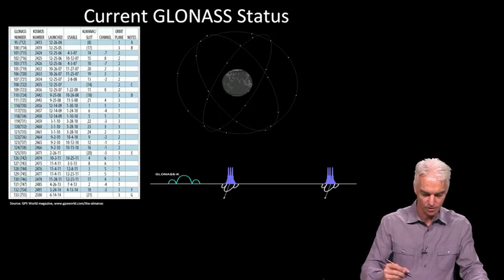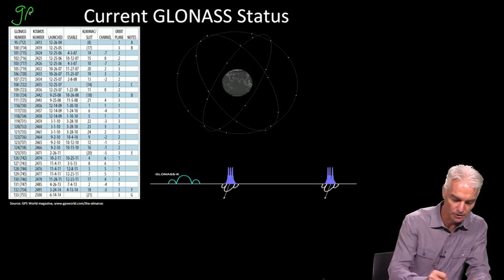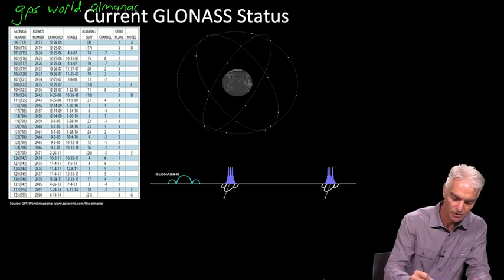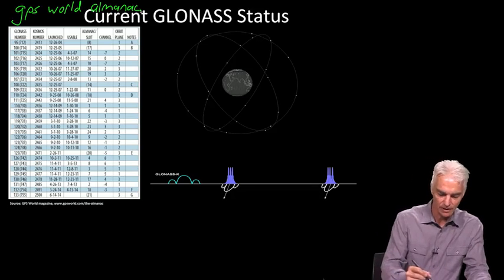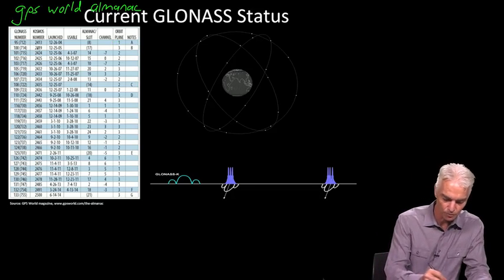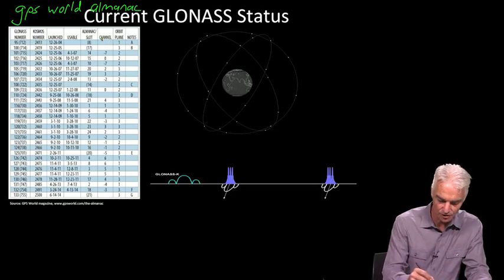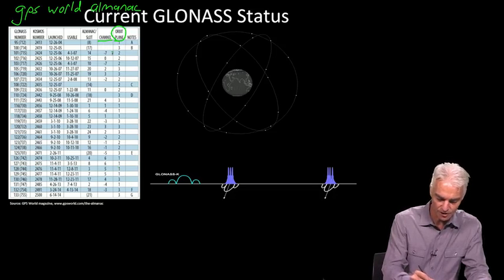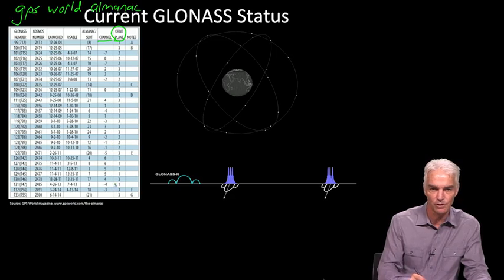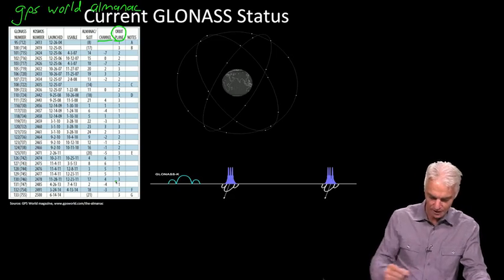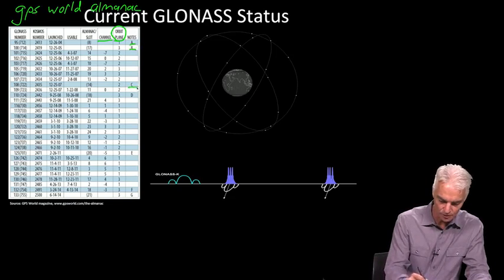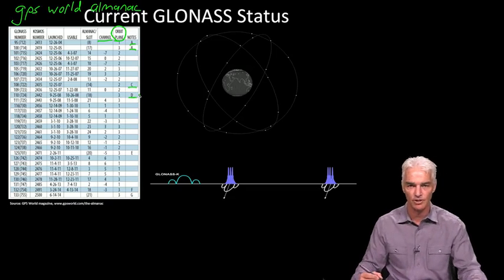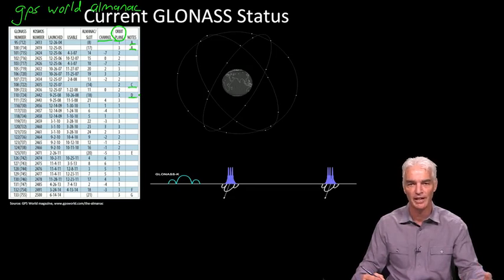Just like with GPS and any other system, a good place to find out the current state of the system is this GPS World Almanac site. Just Google GPS World Almanac and you will find this. They include which satellite is in orbit, which orbital plane it is—you'll see numbers 1 through 3 because there's only three orbital planes—which frequency channel each satellite is on, so you'll see these numbers minus 7 through plus 6, and notes to tell you which ones are operational and which not.